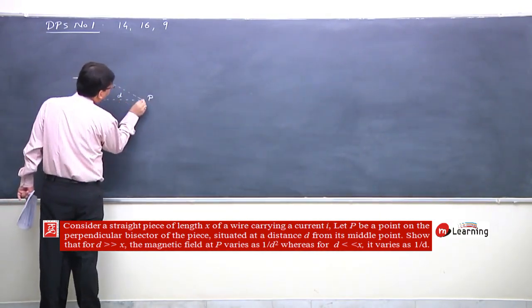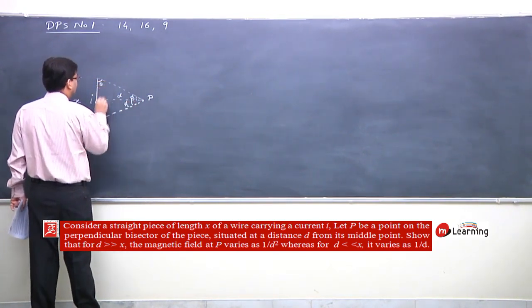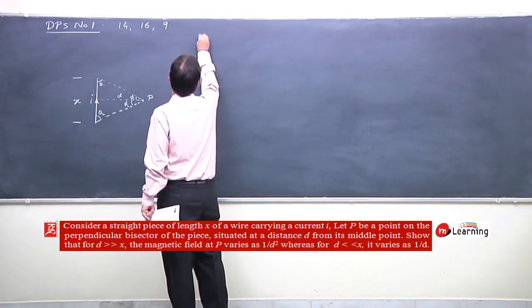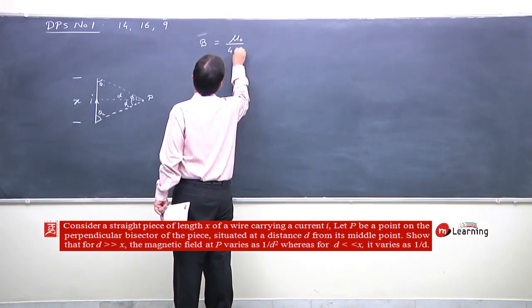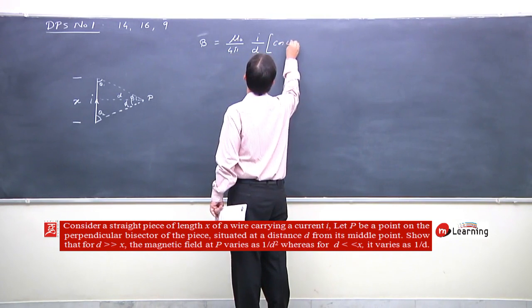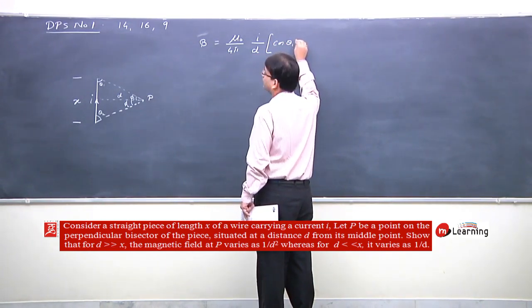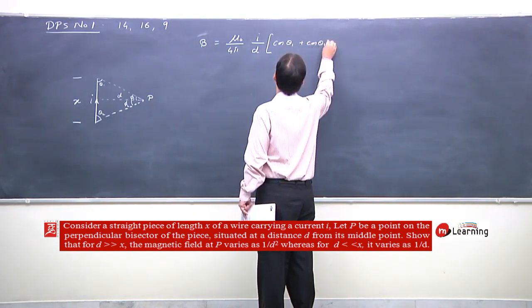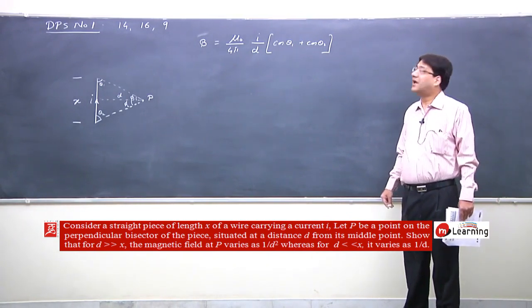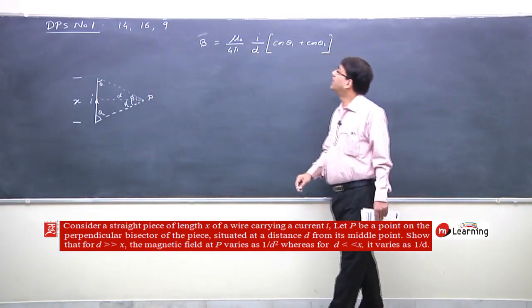We take a wire at distance D from point P. The angles are phi₁, phi₂, theta₁, theta₂. The magnetic field magnitude at point P is given by: B = μ₀/4π · I/d · (cos θ₁ + cos θ₂). This expression has been written down.